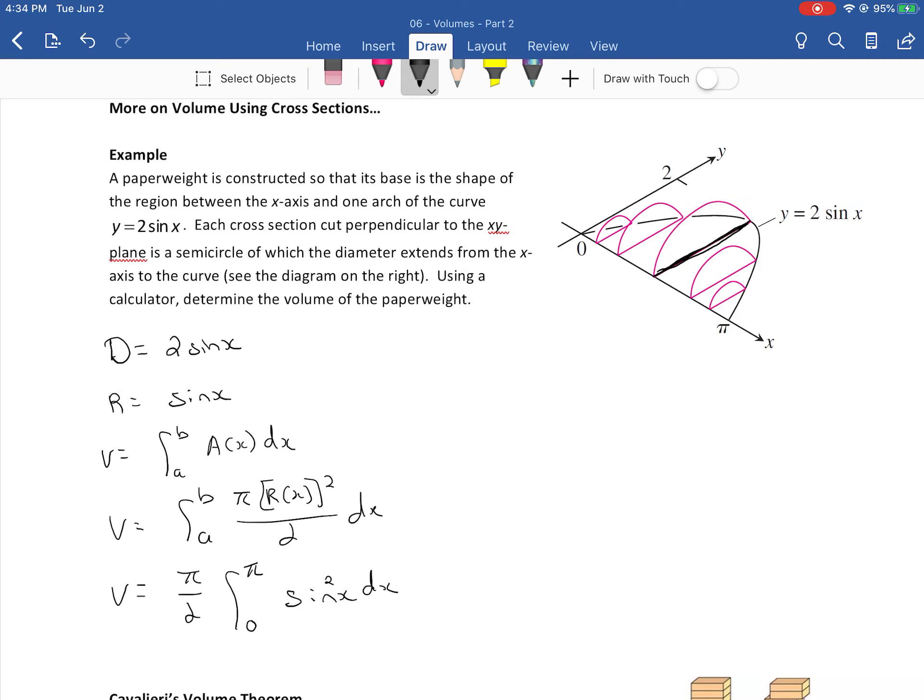And when I press enter on that I get pi over 2 which if you wanted to get as a decimal is about 1.57 units cubed.